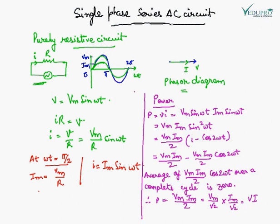To find the power in a purely resistive circuit, power equals instantaneous voltage multiplied by instantaneous current: VM sine omega t times IM sine omega t. After solving, the average of the oscillating term over positive and negative cycles is zero. Therefore, the average power is VM IM upon 2, which equals V into I.